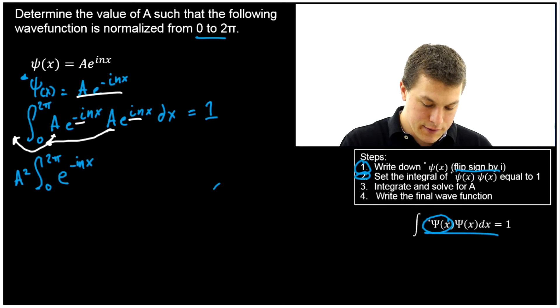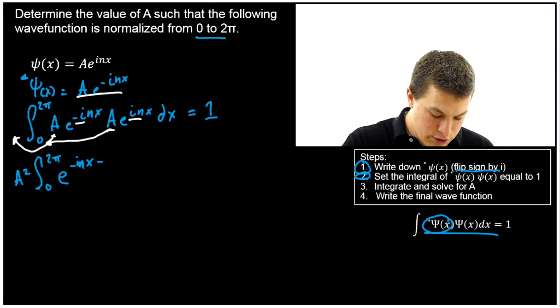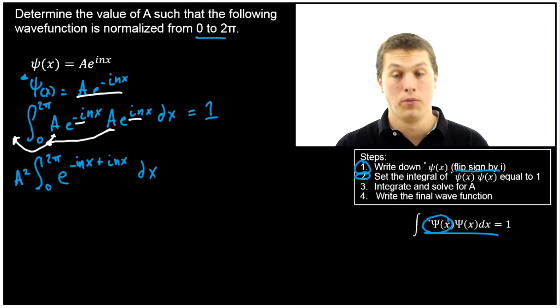And now we're going to get e^(-inx). And then we're going to just add that to our other exponent. Whenever we add or whenever we multiply two exponential functions we just add what's up top.